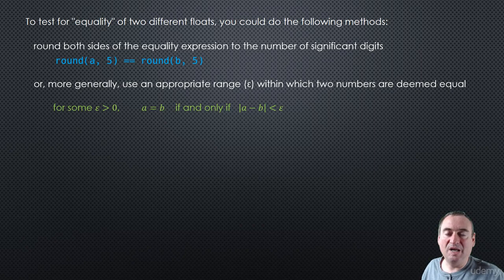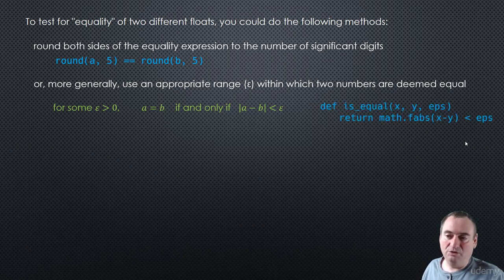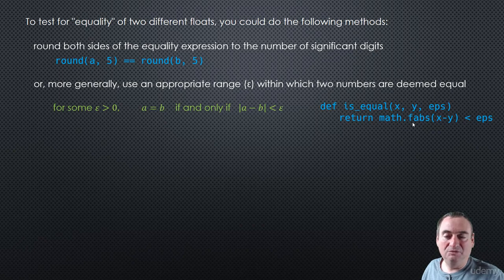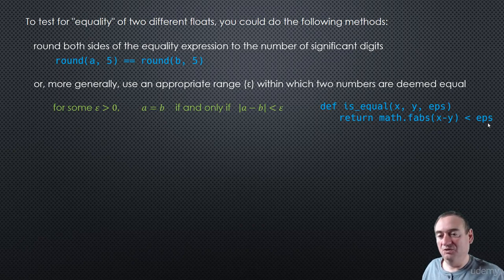So as long as the difference between the two numbers is less than some small positive number, we can consider the two numbers to be equal — they're approximately equal, they're close to each other. You could write your own method: def is_equal, pass in the two numbers x and y, pass in this tolerance epsilon value, and look at the absolute value of x minus y using the floating point absolute value from the math module, and test whether that's less than the epsilon we passed in.